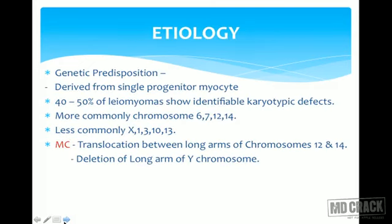There is a genetic predisposition to fibroids. They are derived from a single progenitor myocyte. 40 to 50 percent of leiomyomas show identifiable karyotypic defects. Chromosomes more commonly involved are 6, 7, 12, and 14; less commonly X, 1, 3, 10, and 13. Most commonly there is translocation between the long arms of chromosomes 12 and 14, and deletion of the long arm of chromosome Y.